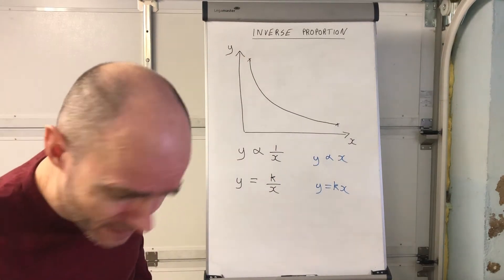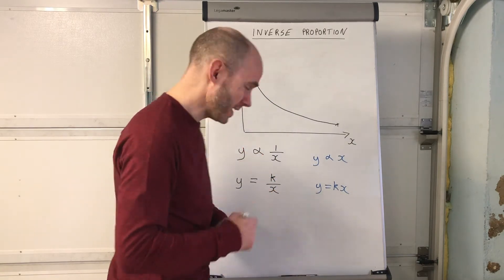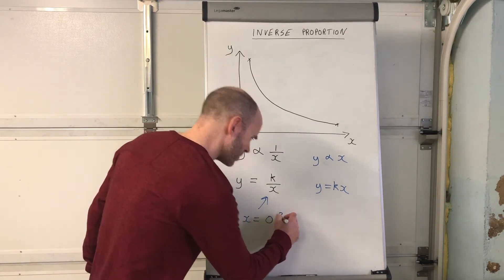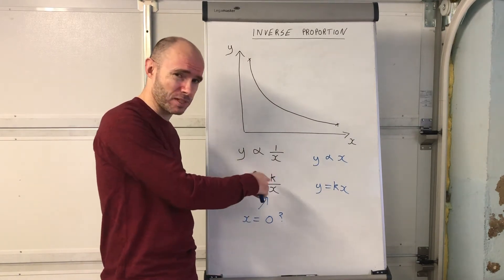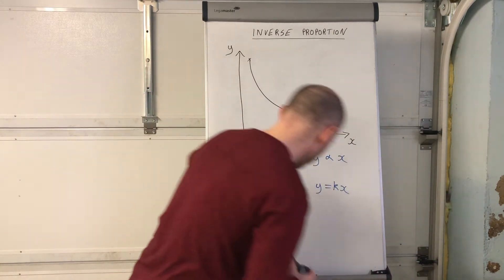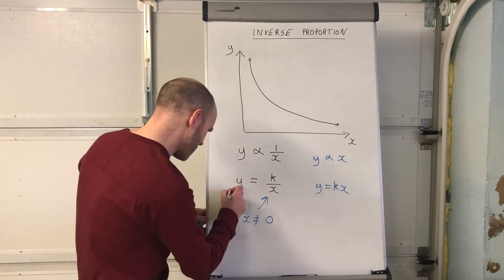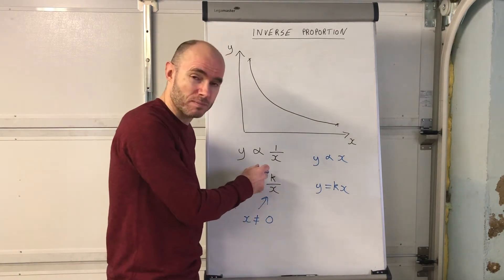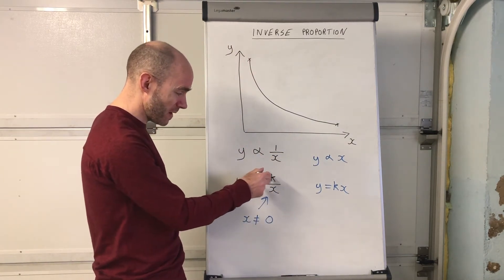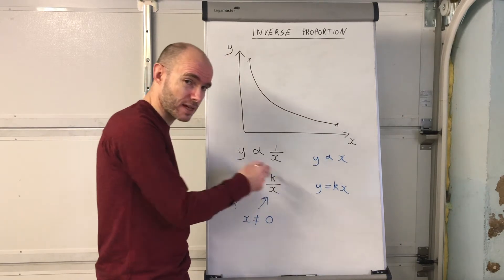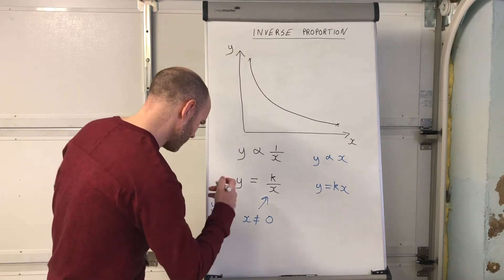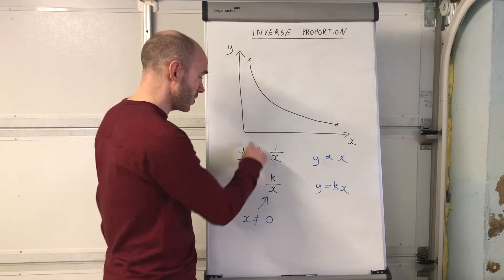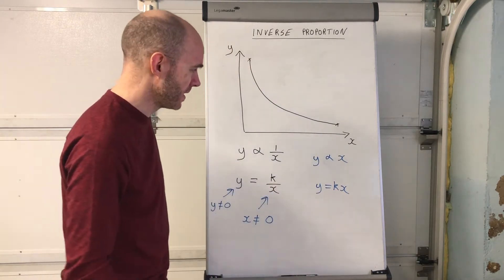We don't actually draw the graph touching the axes. Quick explanation why: can x ever be equal to zero? No, it can't. If you try to type any number divided by zero into your calculator, you can't do it — it's undefined. You cannot divide a number by zero. So x is never equal to zero. What about y? Can y ever equal zero? The answer is no, because k is always some positive value, and you're not going to be able to divide that by any other number to get zero. So y is never zero and x is never zero — that's why the graph doesn't touch the axes.